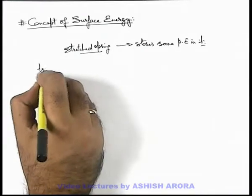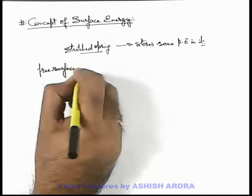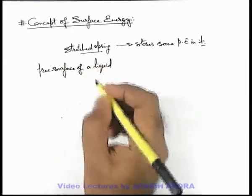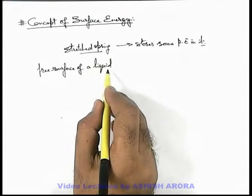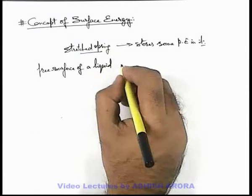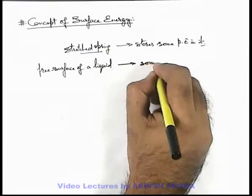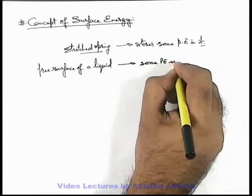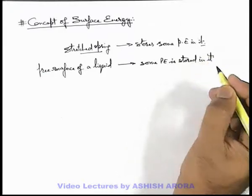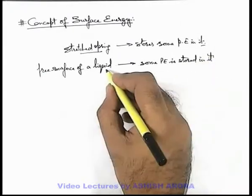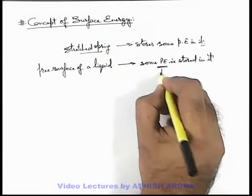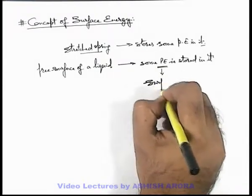Similarly, when we talk about the free surface of a liquid, as we have discussed, due to surface tension the free surface of a liquid also behaves like a stretched membrane. So we can say in the free surface of a liquid also some potential energy is stored in it. And this energy is only stored in the surface of the liquid which is behaving like a stretched membrane. That's why this potential energy is termed as surface energy.